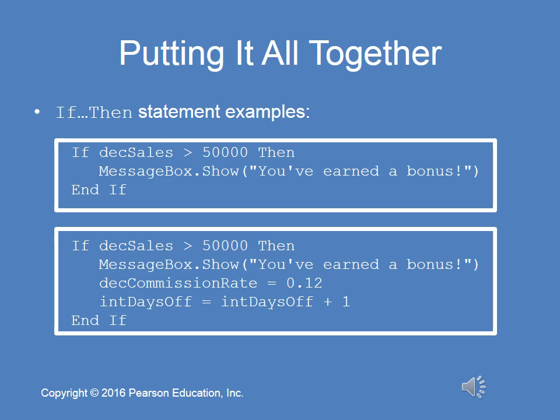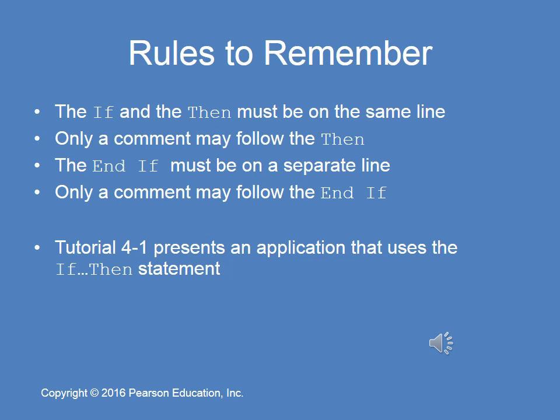Obviously, if decimalSales greater than 50,000 is false — say decimalSales is 49,000 — then the body of the condition is skipped. Here are some rules to remember when using if-then statements. The 'if' and 'then' keywords must be on the same line, and only a comment may follow the 'then'. The 'end if' must be on a separate line, and only a comment may follow the end if.